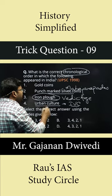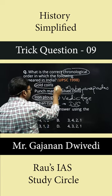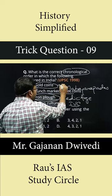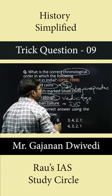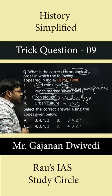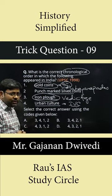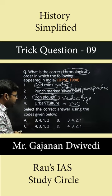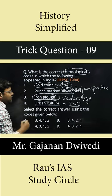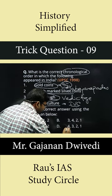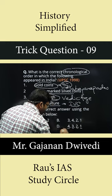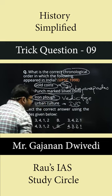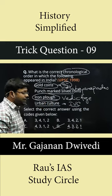Then, the casted gold coins were introduced by the Indo-Greeks in the post-Mauryan age. So the correct chronological sequence is 4, 3, 2, and 1, and the answer here would be D.